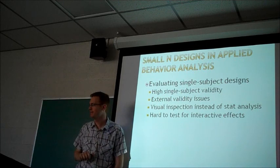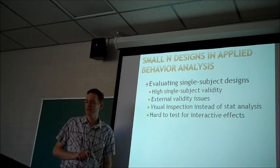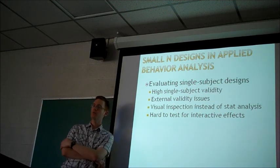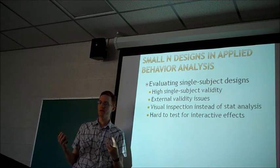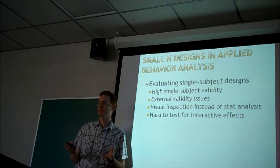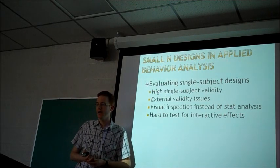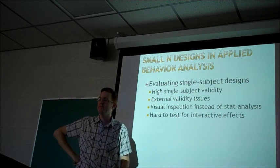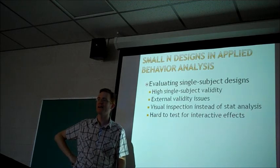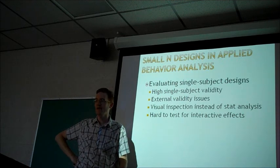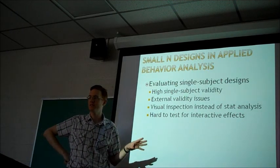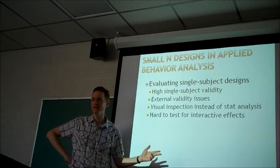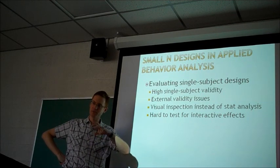Another common drawback of small-N designs is that it's really difficult to look for interactions, which involves having two or more independent variables that interact with one another. If you have multiple different treatments that might interact, that could be useful to know, but if you're looking at one person it can be hard to make those conclusions. The type of design that works really well if you want to test for interactions is factorial designs — those have at least two independent variables, and we went through many examples of how to determine whether you have main effects or interactions.